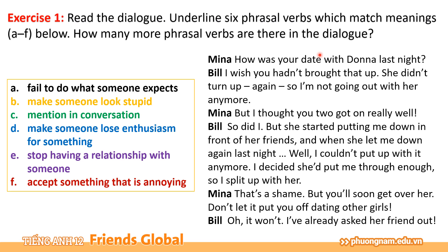So you can see this conversation is about an unsuccessful date of Bill and Donna. Mina and Bill are discussing about what happened in the date. Các bạn có thể thấy đoạn hội thoại này là về một cái buổi hẹn không thành công giữa Bill và Donna. Ở đây, Bill và Mina đang bàn về những sự việc đã xảy ra trong buổi hẹn đó.